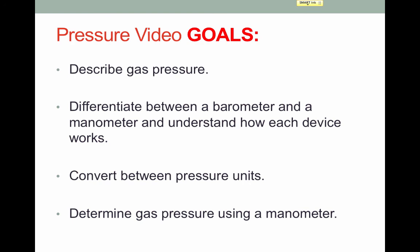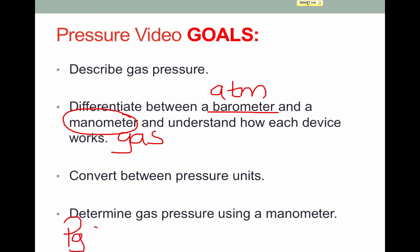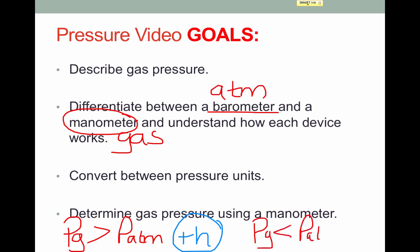That brings us to the end of the pressure video. Let's quickly review our goals. First, we described gas pressure — the force exerted by gas particles when they collide with the walls of their container. Then we differentiated between a barometer, used to measure atmospheric pressure, and a manometer, used to measure gas pressure in a closed container, and looked at how each works. We also learned to convert between pressure units: atmosphere, Torr, mmHg, and Pascals. Finally, we learned how to determine gas pressure using a manometer: add h when gas pressure is greater than atmospheric pressure, and subtract h when gas pressure is less than atmospheric pressure.